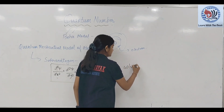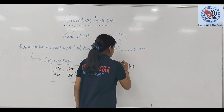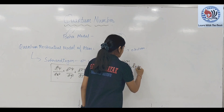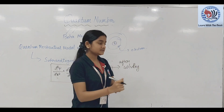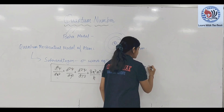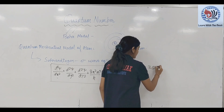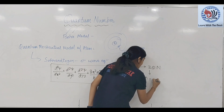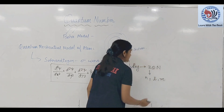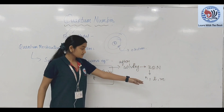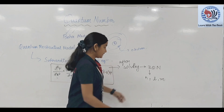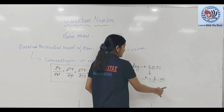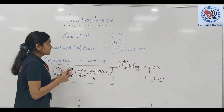After solving this equation, we have three variables introduced as three quantum numbers, which are N, L, M. N is our principal quantum number, L is the azimuthal quantum number, and M is the magnetic quantum number.